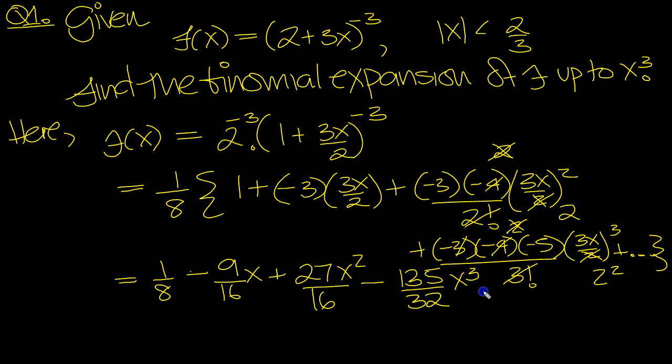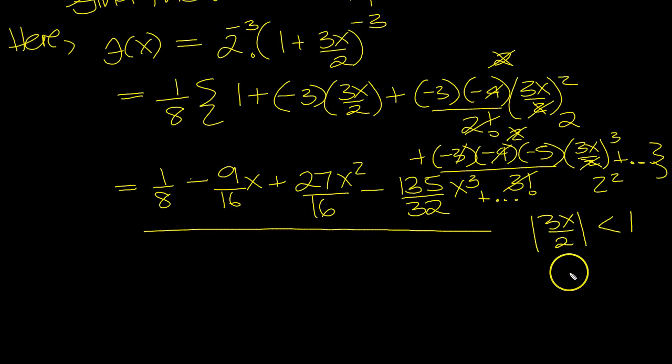So that's that, plus dot dot dot. And that was valid for |3x/2| less than 1, which means |x| is less than 2/3—take the 3 over 2 out and move the 2 up and the 3 down.